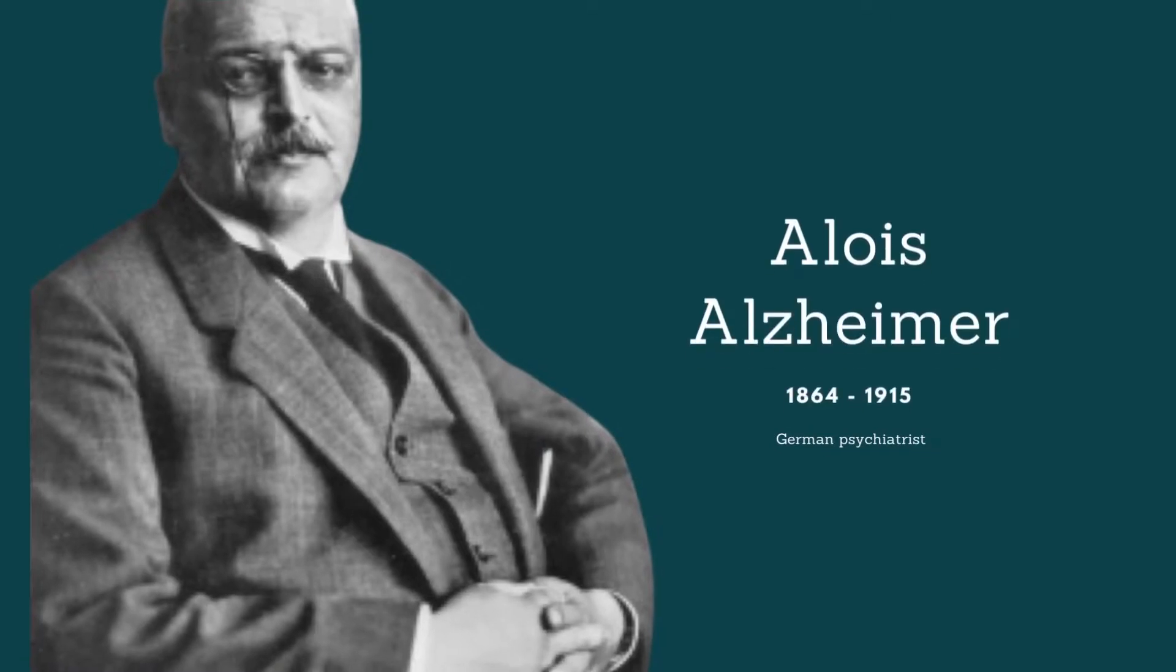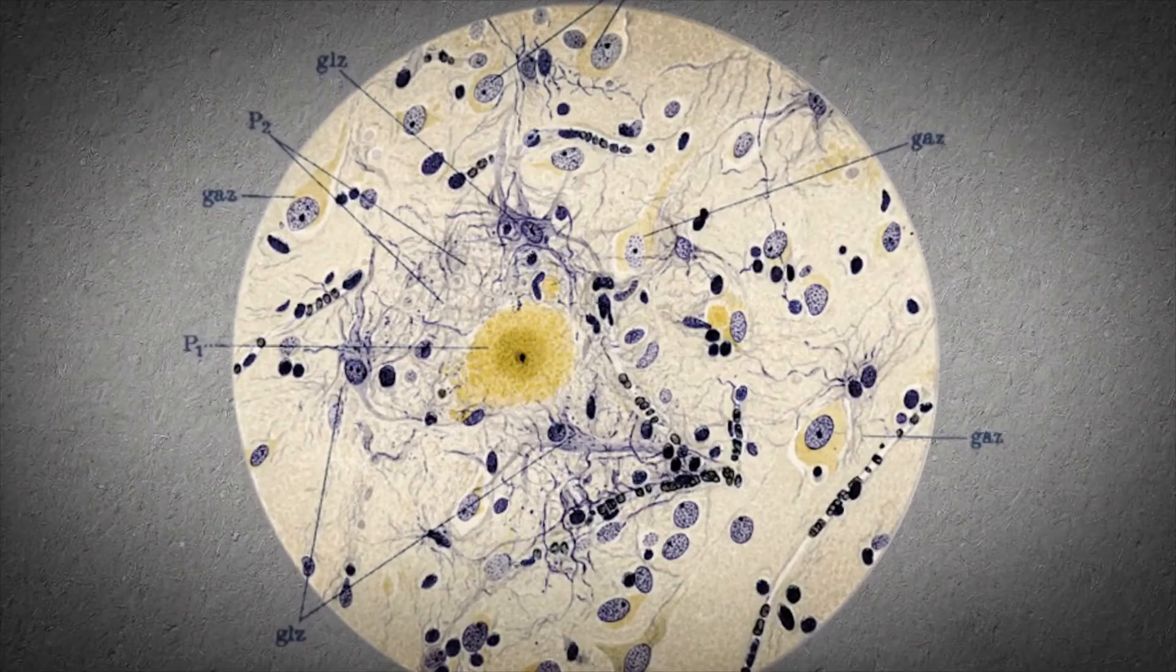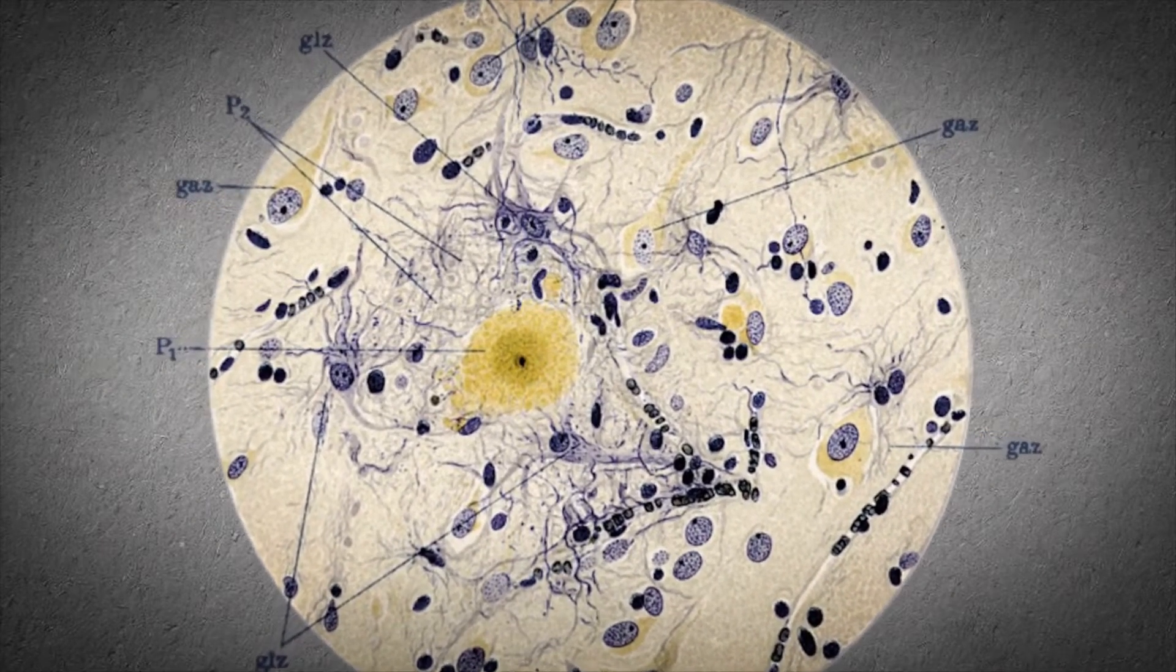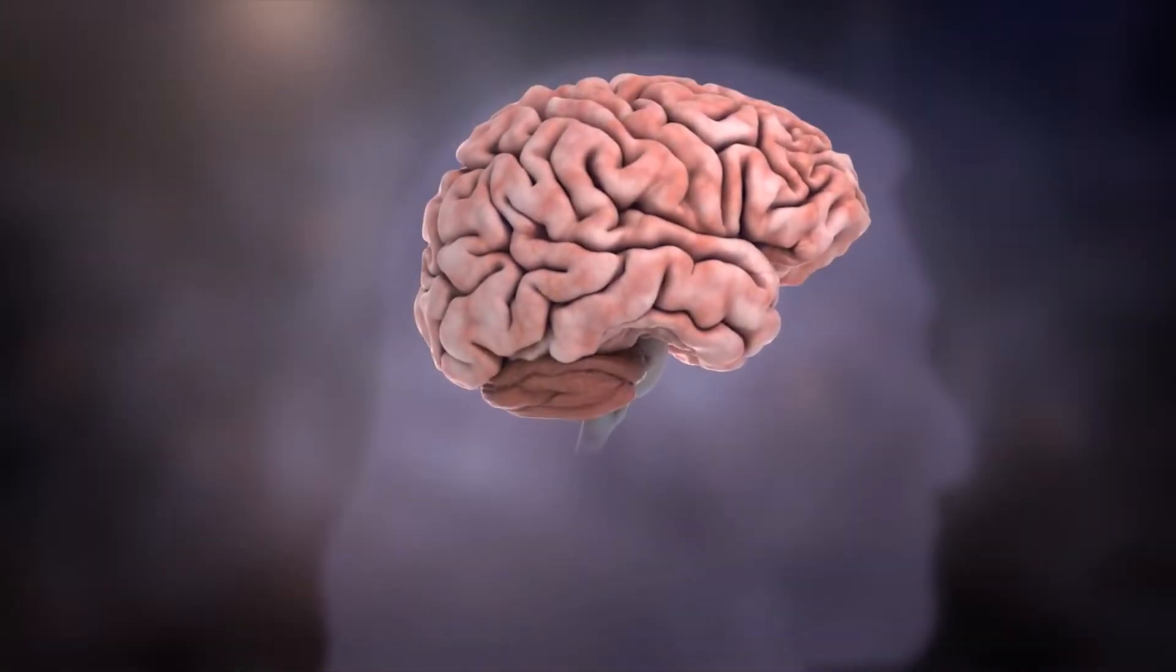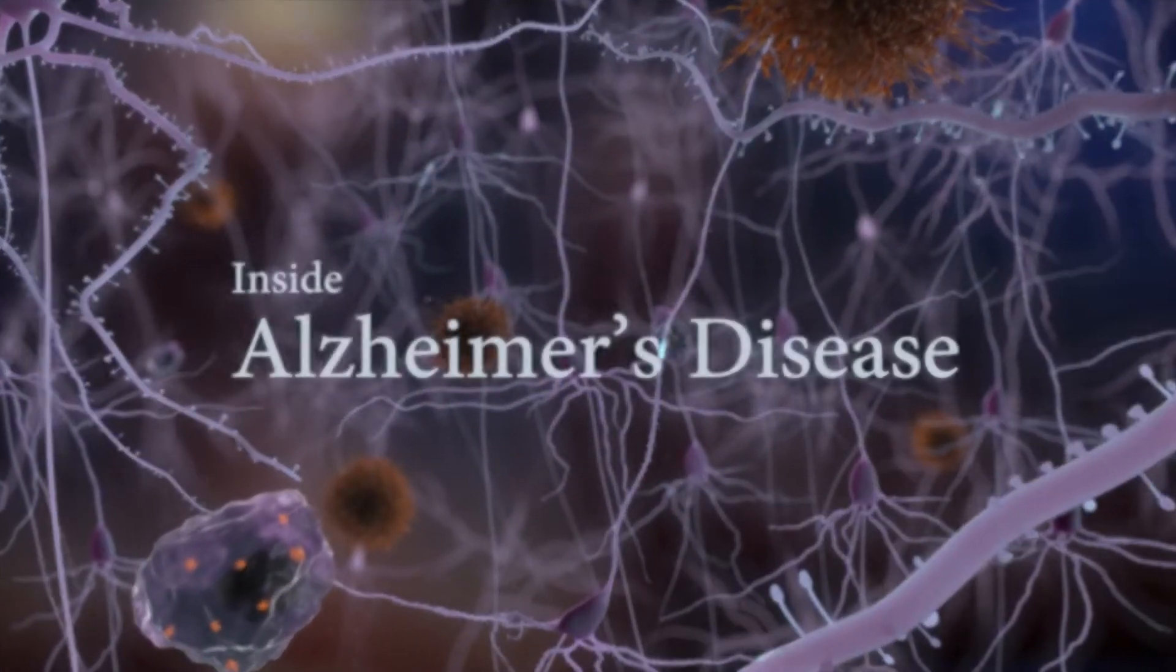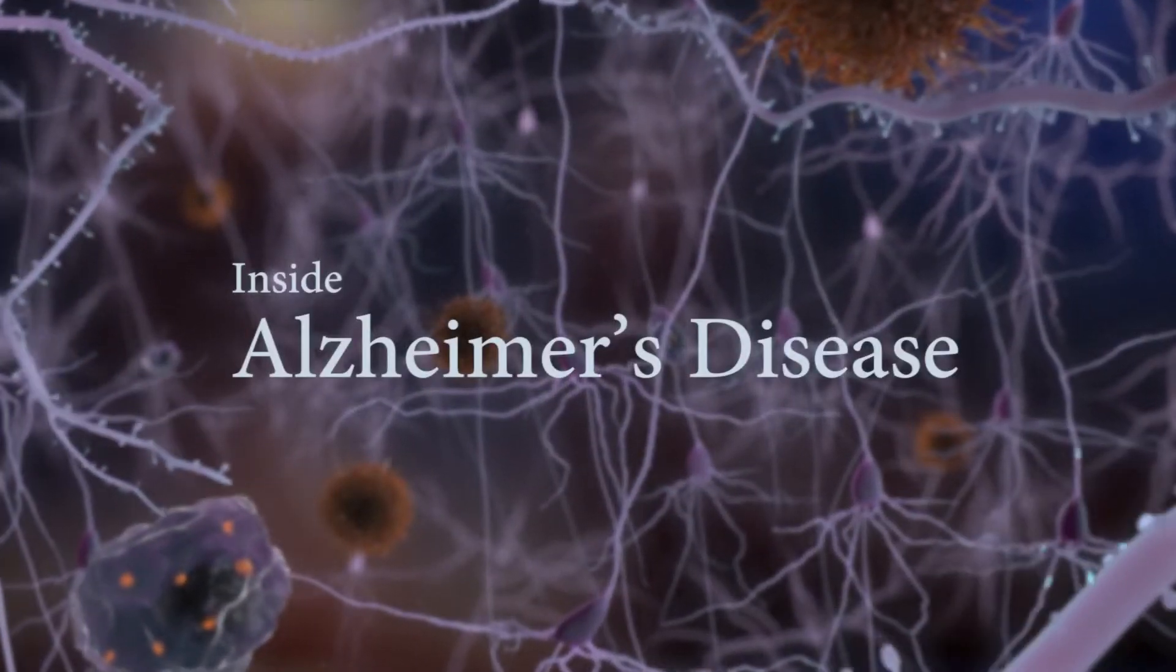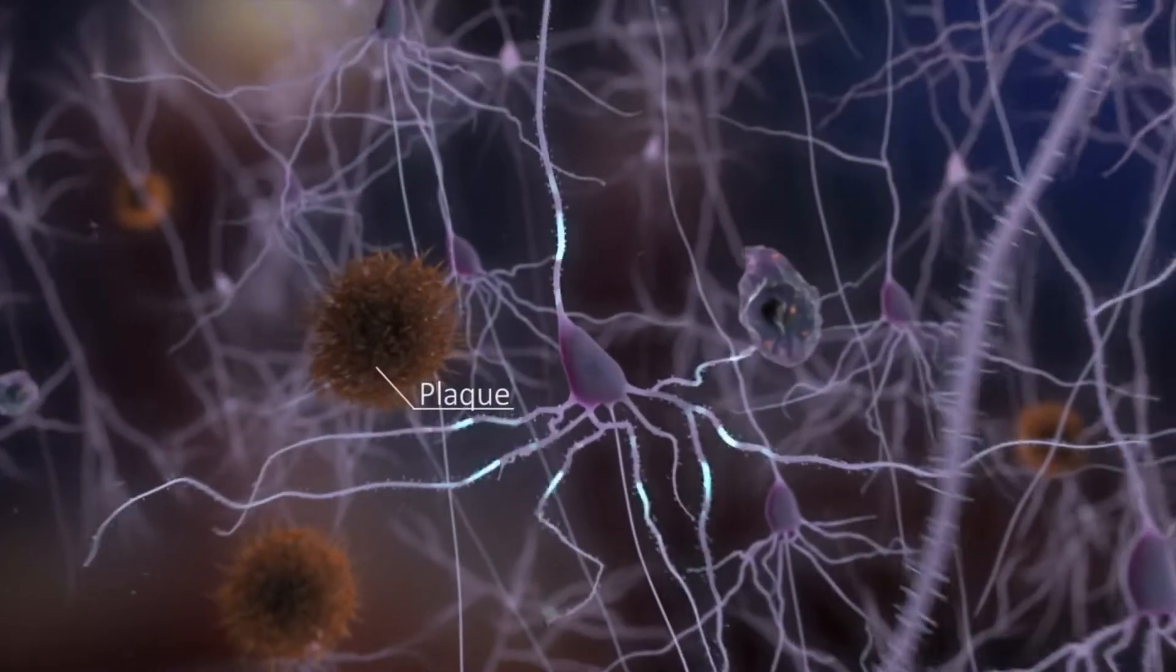Over a century ago, a German doctor called Alois Alzheimer spotted anomalies in brain sections of a patient with dementia. Ever since, people have been studying the strange plaques and tangles that he saw, hoping that we could one day understand and cure what is now known as Alzheimer's disease.